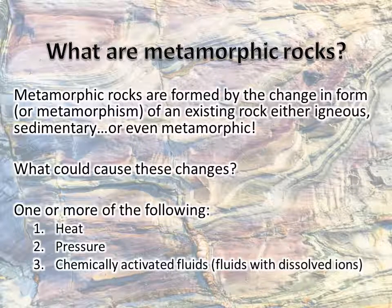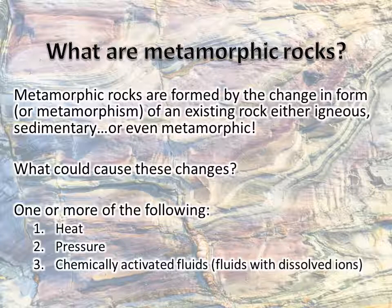So, what are metamorphic rocks? Metamorphic rocks are rocks that are formed by the change in form, or metamorphism, of an existing rock. Changes include compacting the rock into a smaller and denser form, or changing the minerals present in the original rock, also known as the protolith. The protolith can be igneous, sedimentary, or even metamorphic. Metamorphism happens when the protolith is exposed to heat, pressure, or chemically activated fluids — fluids with dissolved ions that can supply ions needed to make chemical reactions take place, or flush excess ions away.